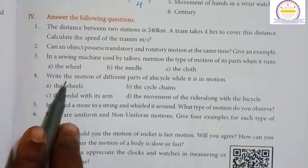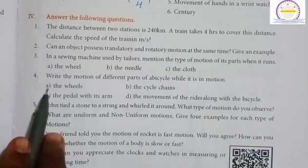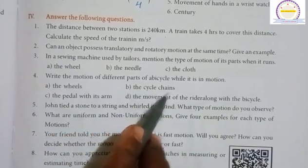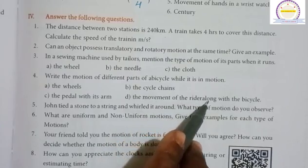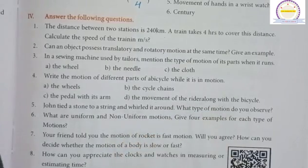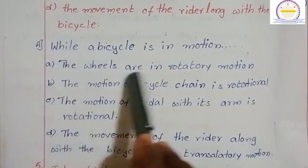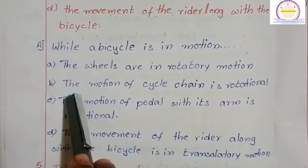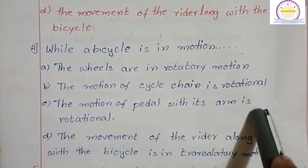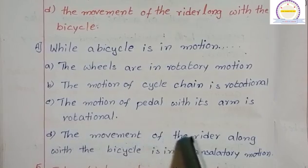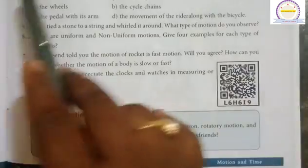Fourth question: Write the motion of different parts of a bicycle while it is in motion: a) the wheels, b) the cycle chain, c) the pedal with its arm, d) the movement of the rider along with the bicycle. The wheels are in rotatory motion. The motion of the cycle chain is rotatory. The pedal with its arm is in rotatory motion. The movement of the rider along with the bicycle is in translatory motion.